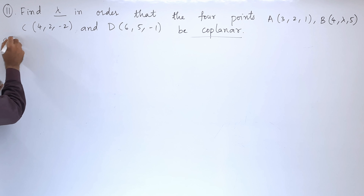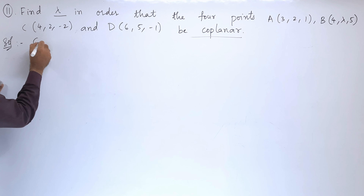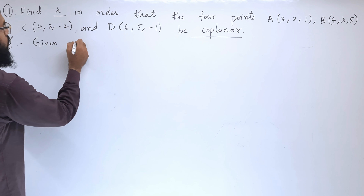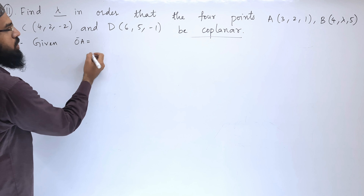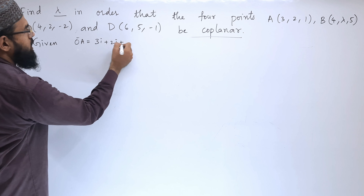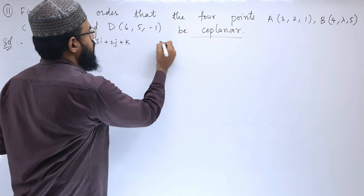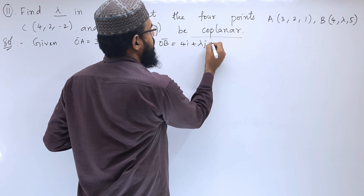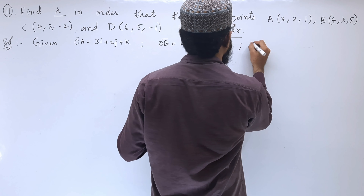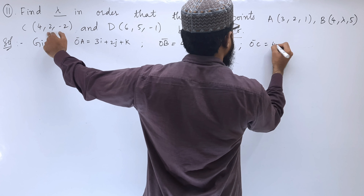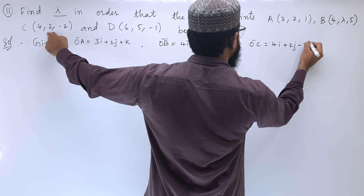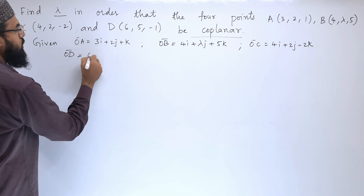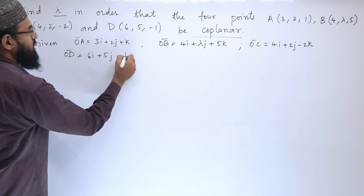Let us start the solution. We will write these points in vector form as position vectors: OA = 3i + 2j + k, OB = 4i + λj + 5k, OC = 4i + 2j - 2k, and OD = 6i + 5j - k.